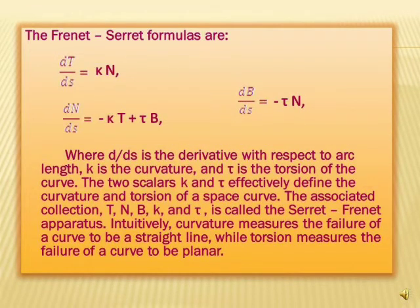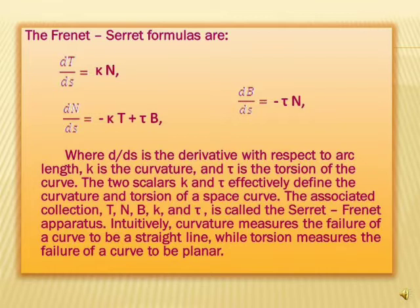The Frenet-Serret formulas are: dt/ds = κn, dn/ds = −κt + τb, and db/ds = −τn, where d/ds is the derivative with respect to arc length, κ is the curvature, and τ is the torsion of the curve.